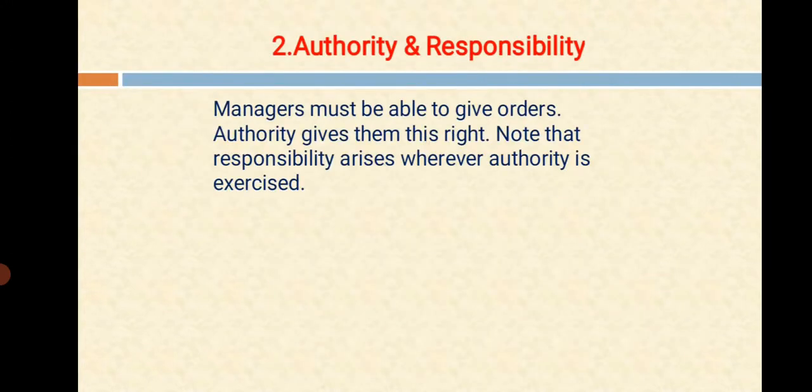And the next one is Authority and Responsibility. These are the two key aspects of management. Authority facilitates the management to work efficiently and responsibility makes them responsible for the work done under their guidance or leadership. Managers must be able to give orders. Authority gives them this right. Note that responsibility arises wherever authority is exercised.